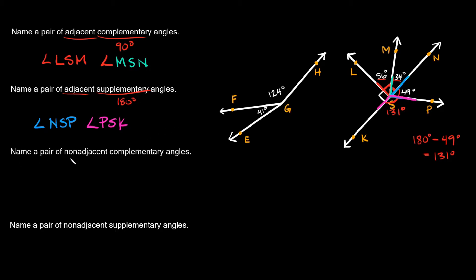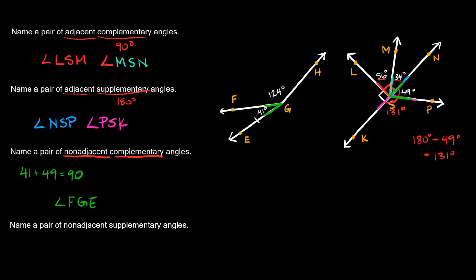This one says: name a pair of non-adjacent complementary angles. So we're looking for angles that are not next to each other but add up to 90 degrees. This one's a little tricky, but the two angles would be this 41-degree angle and this 49-degree angle, because 41 plus 49 equals 90. So that would be angle FGE and angle NSP.